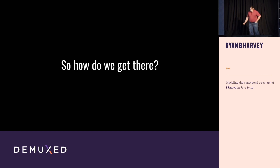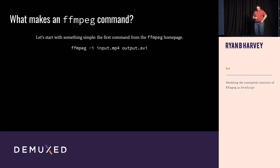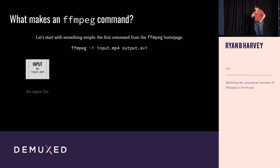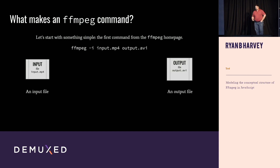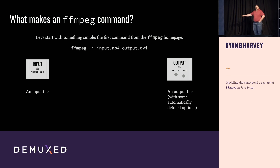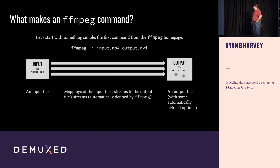So how do we get there? The first question we started to ask is: what makes an FFmpeg command? What are the pieces? Starting with what you find on the FFmpeg homepage — there's an input file and an output file. But there are actually a couple more things going on that aren't expressed in the command. There are automatically defined options that FFmpeg applies based on the file extension. It inspects the input file and defines these options. There's also an automatic mapping of streams from the input file into the output file, which we don't see in the command. So these are things we have to think about.